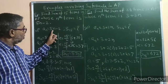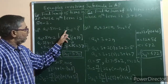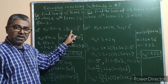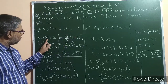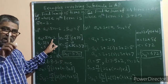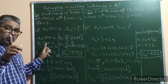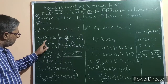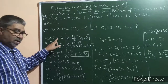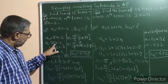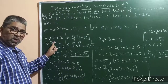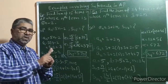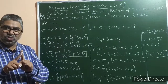Let us solve the first example. an = 5n − 2, and S15 is what we need to find. Now, to get the first term a1, replace n by 1: a1 = 5(1) − 2 = 5 − 2 = 3. So a1, the first term, is 3.